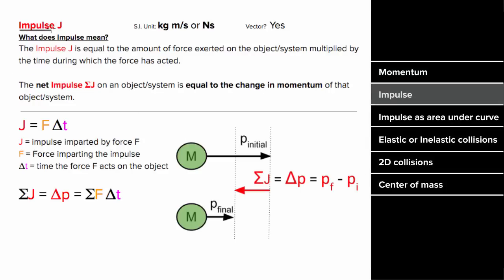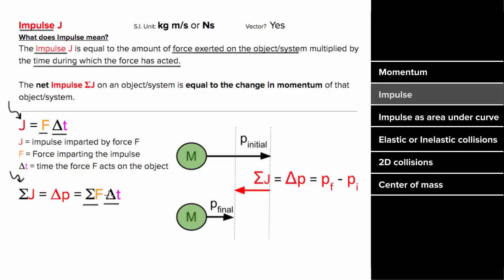What does impulse mean? The impulse is the amount of force exerted on an object or system multiplied by the time during which that force was acting. In equation form, J, the impulse, is equal to the force multiplied by how long that force was acting. The net impulse is going to equal the net force times the time during which that net force was acting.